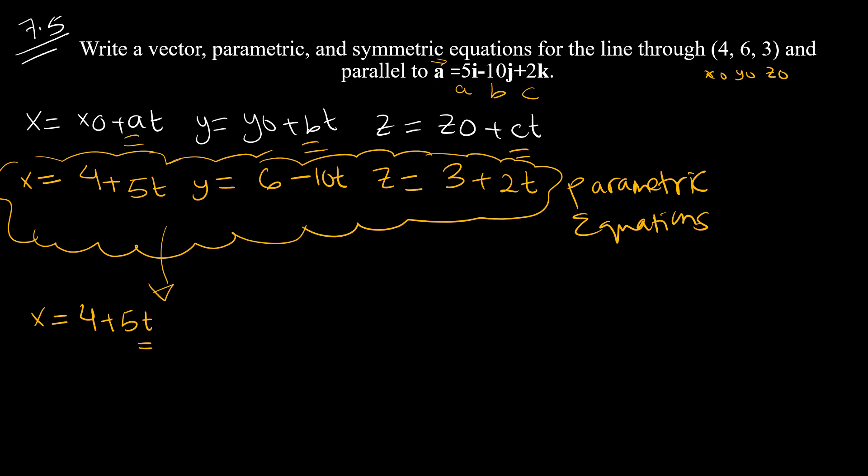Move the 4 to the other side by subtracting 4 from both sides. The 4s cancel out, leaving x minus 4 equals 5T. To isolate T, divide both sides by 5, giving us x minus 4 over 5 equals T. This is for the first one, and similarly we'll do the rest. I'll remove these and write it neatly.